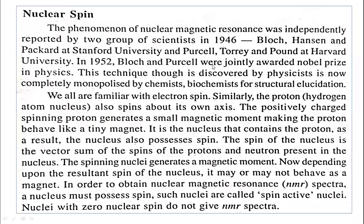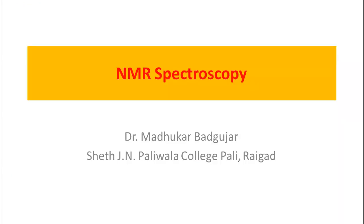In this lecture, I am going to discuss nuclear magnetic resonance spectroscopy. Spectroscopy is the interaction of electromagnetic radiation with matter. In NMR spectroscopy, we also require electromagnetic radiation. NMR spectroscopy is an absorption spectroscopy where the molecule absorbs the electromagnetic radiations, and due to that absorbance, certain changes take place in that molecule.